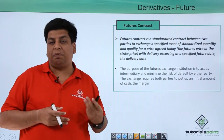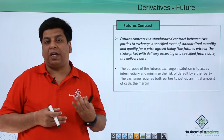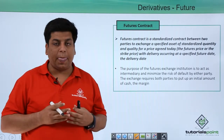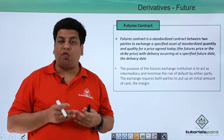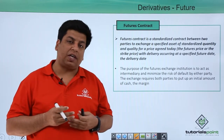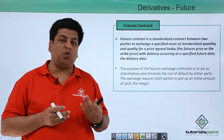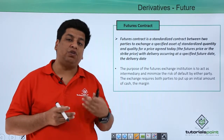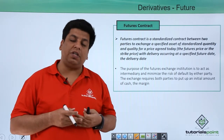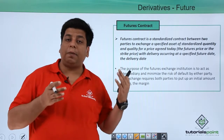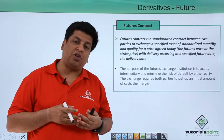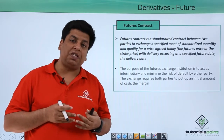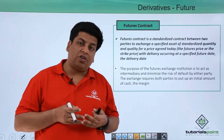That was also the case with the forward contract, where there was a predetermined price for buying and selling a particular derivative product in the future. However, there is a major difference: the forward contract was an OTC — over-the-counter — mechanism, whereas the future contract is an exchange-traded derivative. The price is pre-agreed just like a forward contract, but since it is exchange-traded, it is not a customized contract — it is a standardized contract.